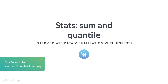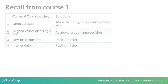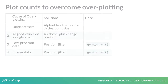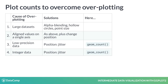Let's wrap up our discussion of stats called from within geomes by looking at two more useful functions: geom_count and geom_quantile. In the first course, we saw that overplotting is always a concern whenever we use geom_point — every data point must be visible. We discussed four ways in which our visualizations may mislead us. We can now add a new geome function to our solutions for low precision and integer data.